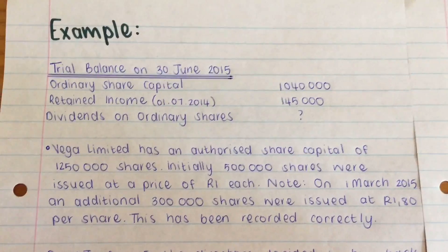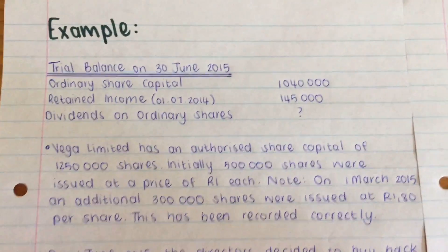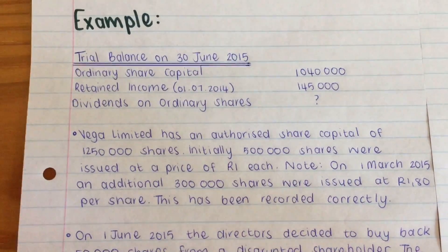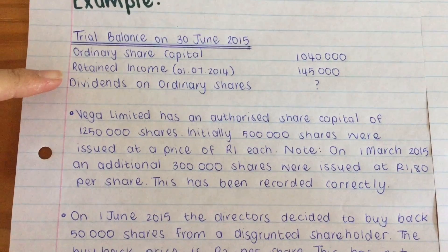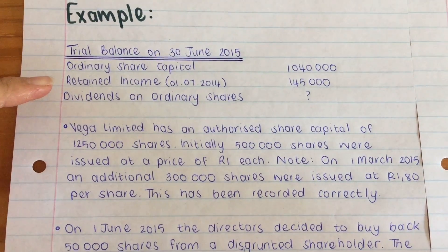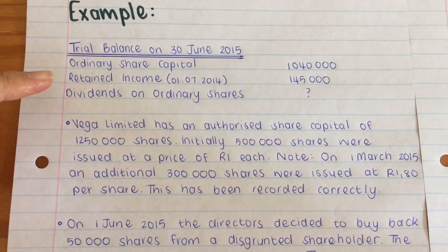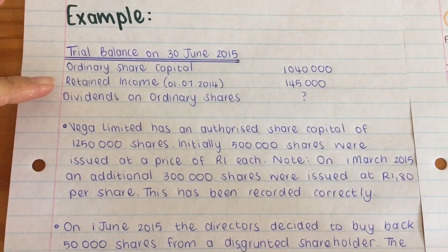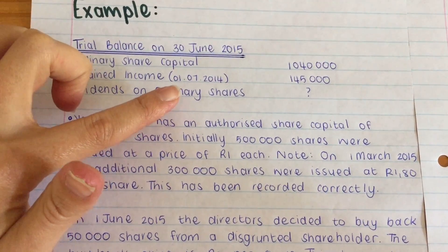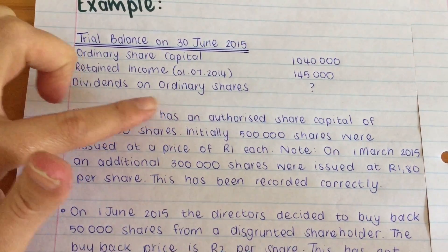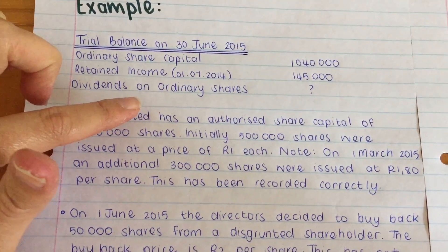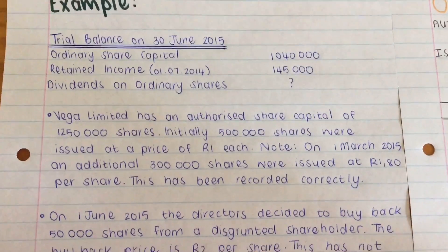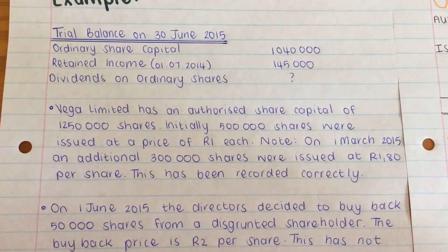Right, so let's get started. I've got a trial balance here and I've only given us the information we will need for the specific entries we're looking at: Ordinary Share Capital, Retained Income — very important at the beginning of the year — and then we need to work out the dividends on ordinary shares. If we read the first adjustment or first transaction: